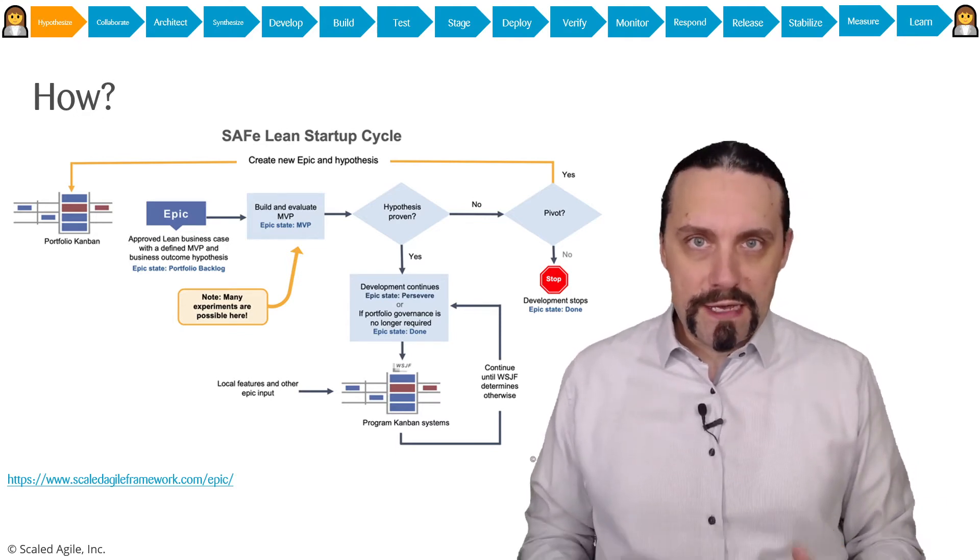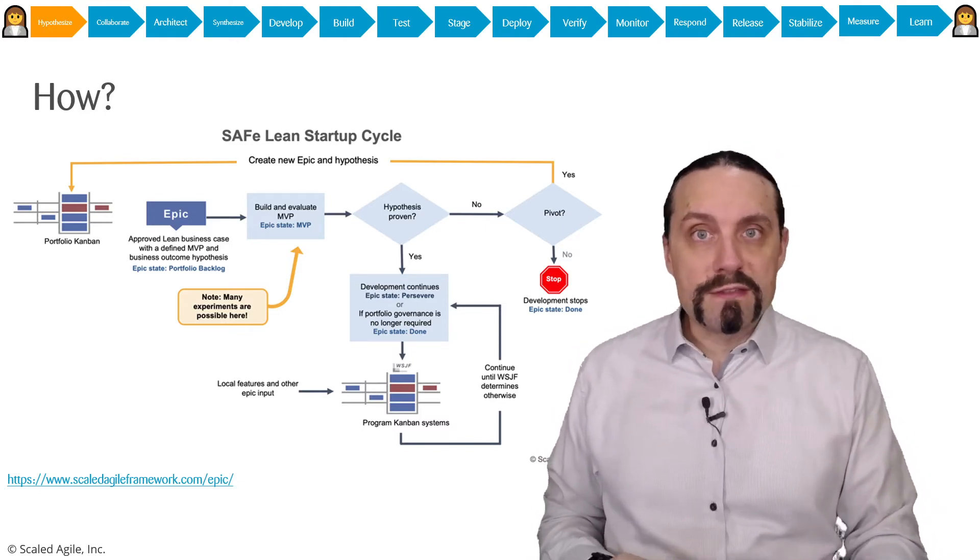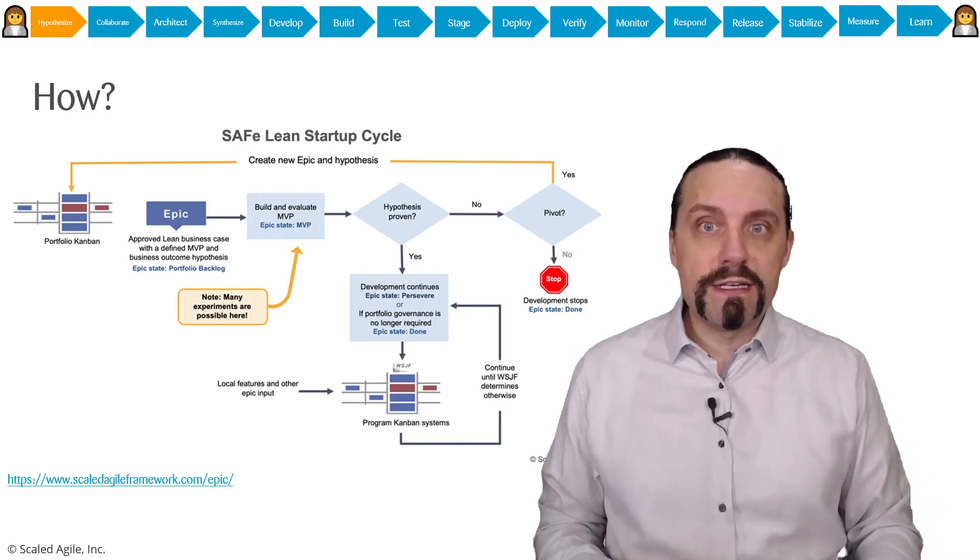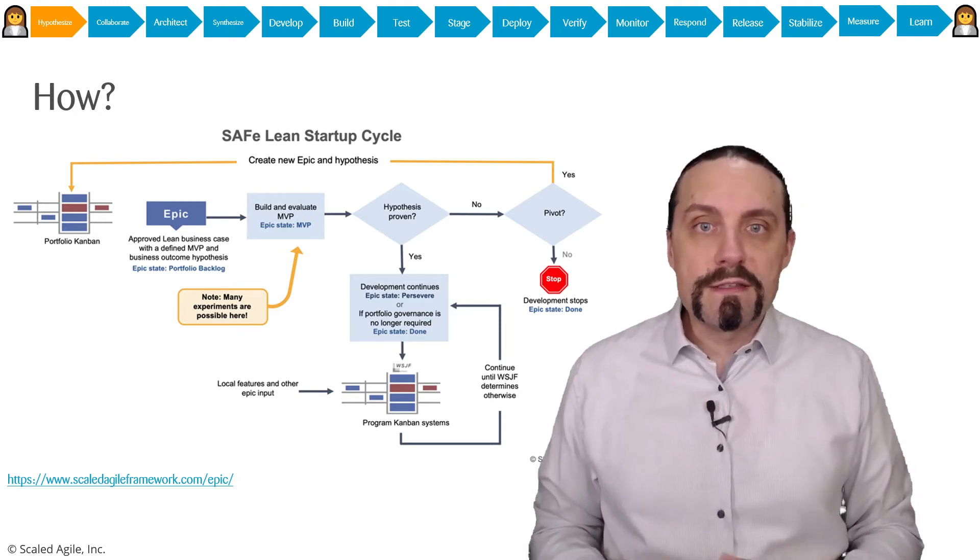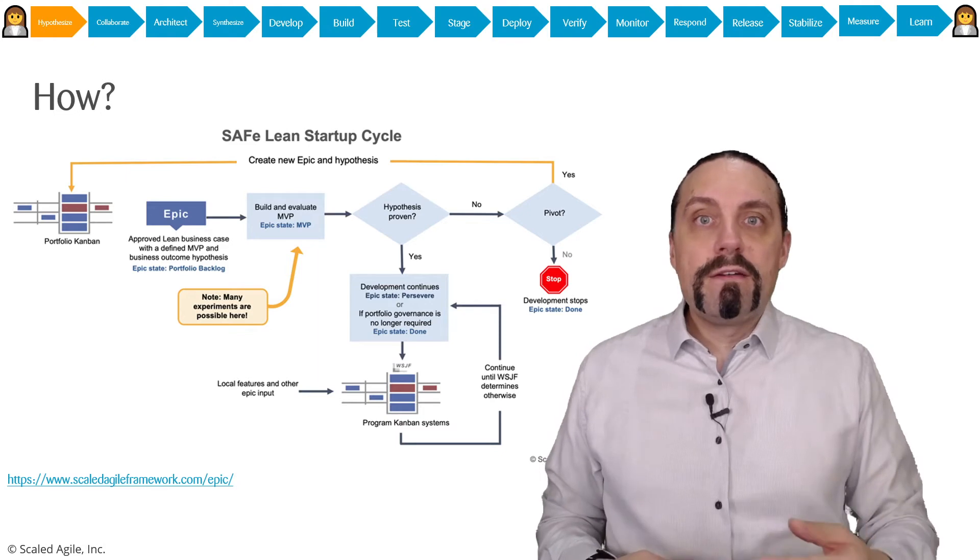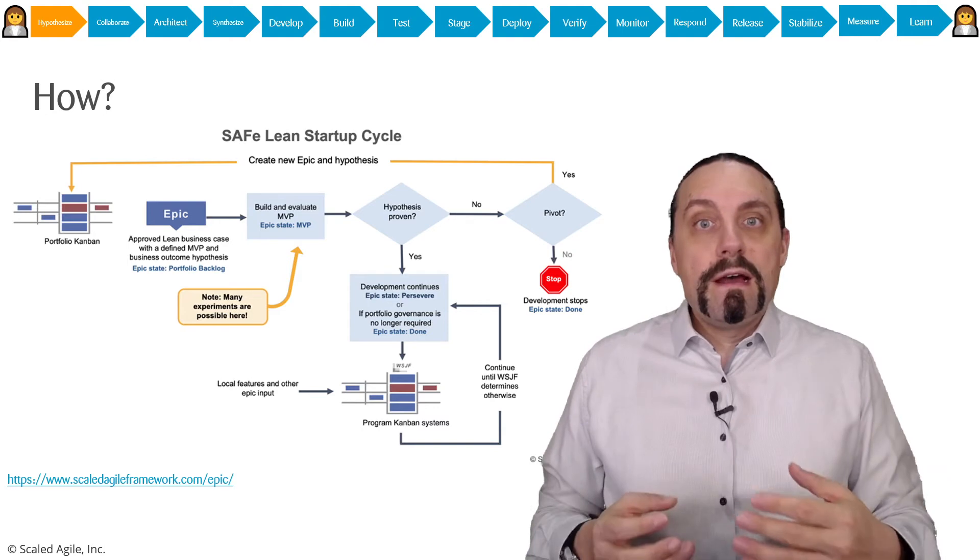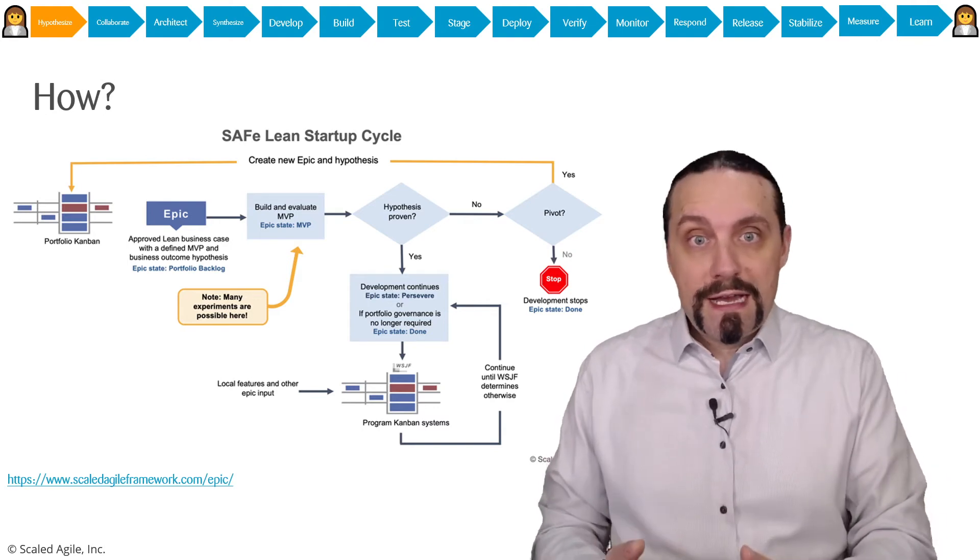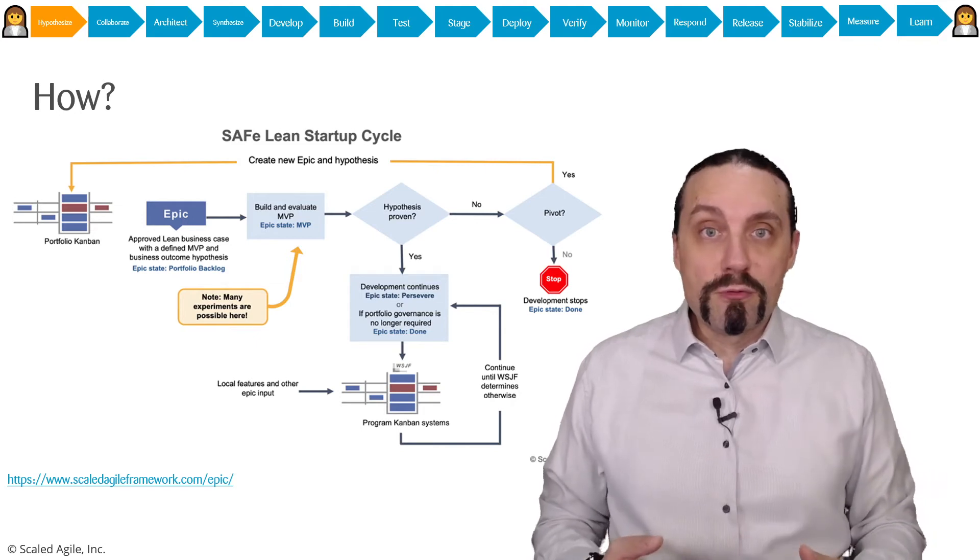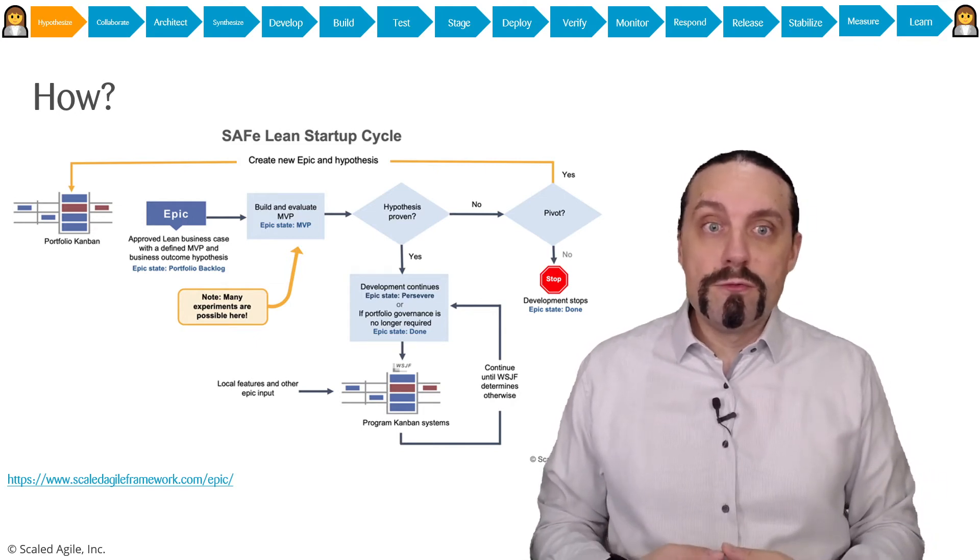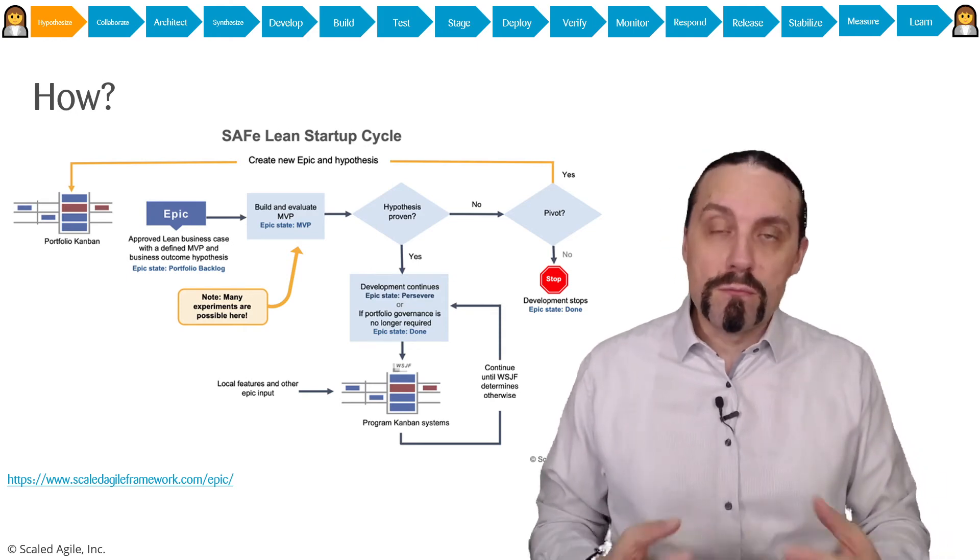Now in the lean business case we have defined what the MVP is. And together with the epic hypothesis statement we know the hypothesis which we need to evaluate. So therefore we use this lean startup cycle where we are going to build now this MVP and to evaluate the hypothesis.